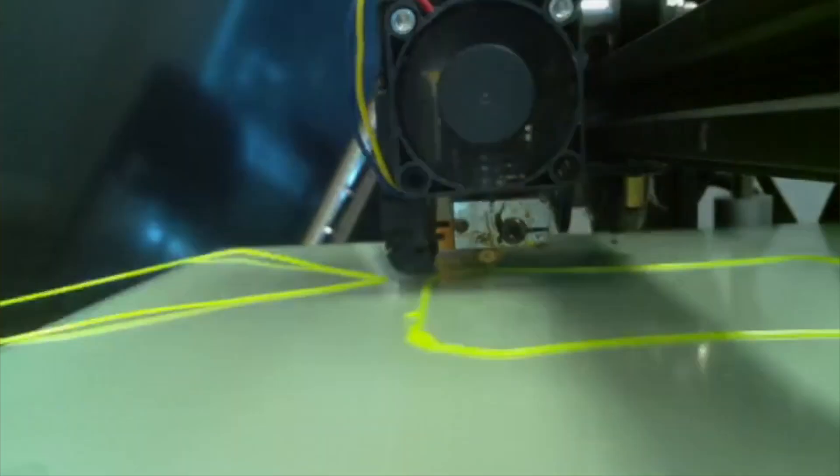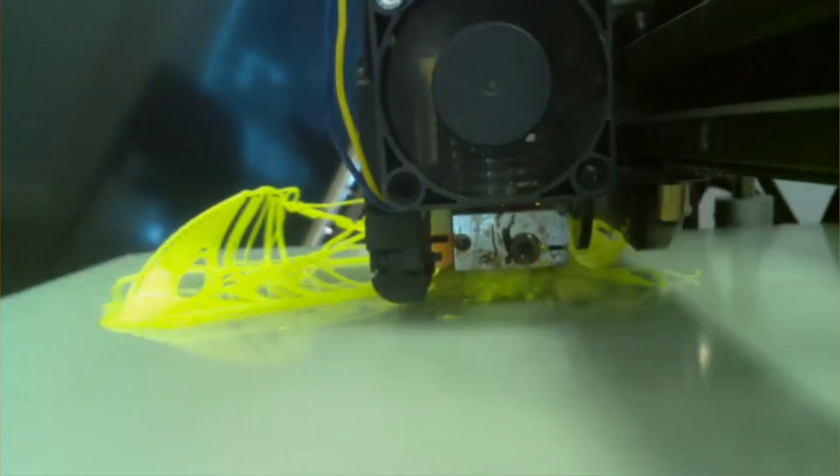So, why do nozzle blobs happen in the first place? Nozzle blobs happen when, most likely, the first layer has peeled up. When you're printing that first layer, maybe a line doesn't go down just right, and it peels up a little bit, causing a chain reaction, causing the whole print to fail. If you're the kind of person that just walks away after starting a print, this can happen to you.